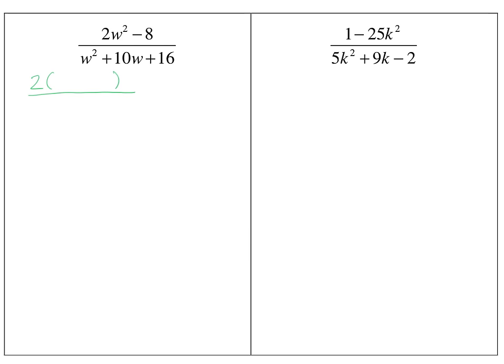When I pull out a 2, I ask: 2 times what gives you 2W squared? And 2 times what gives you negative 8? Hopefully you can tell that's minus 4. So we've pulled out 2(W² - 4) on top.